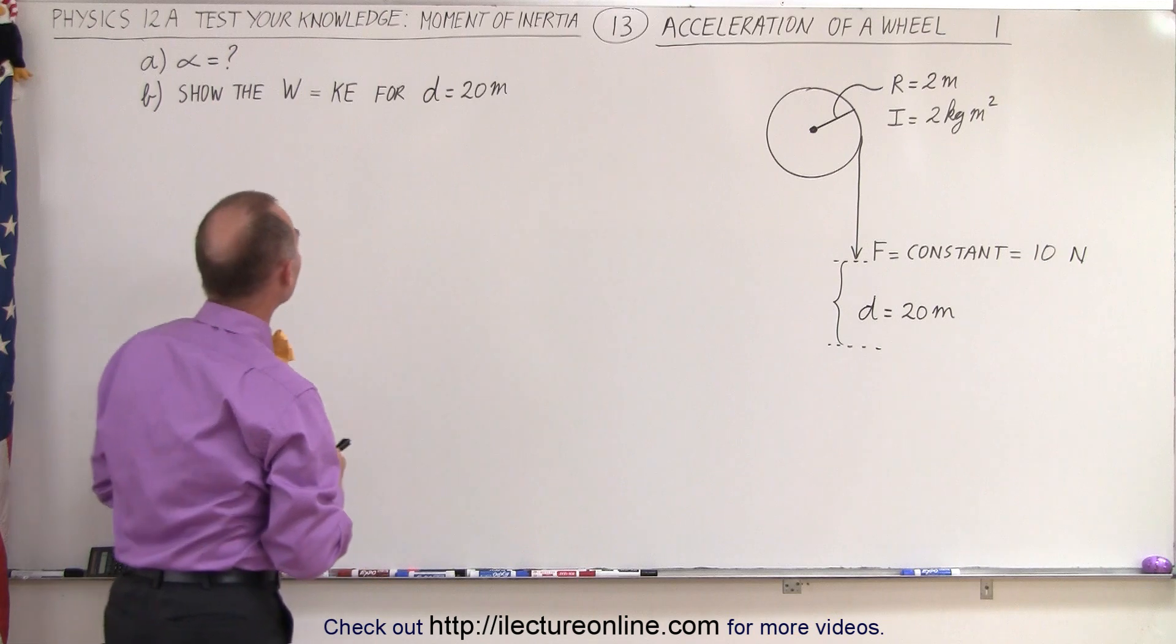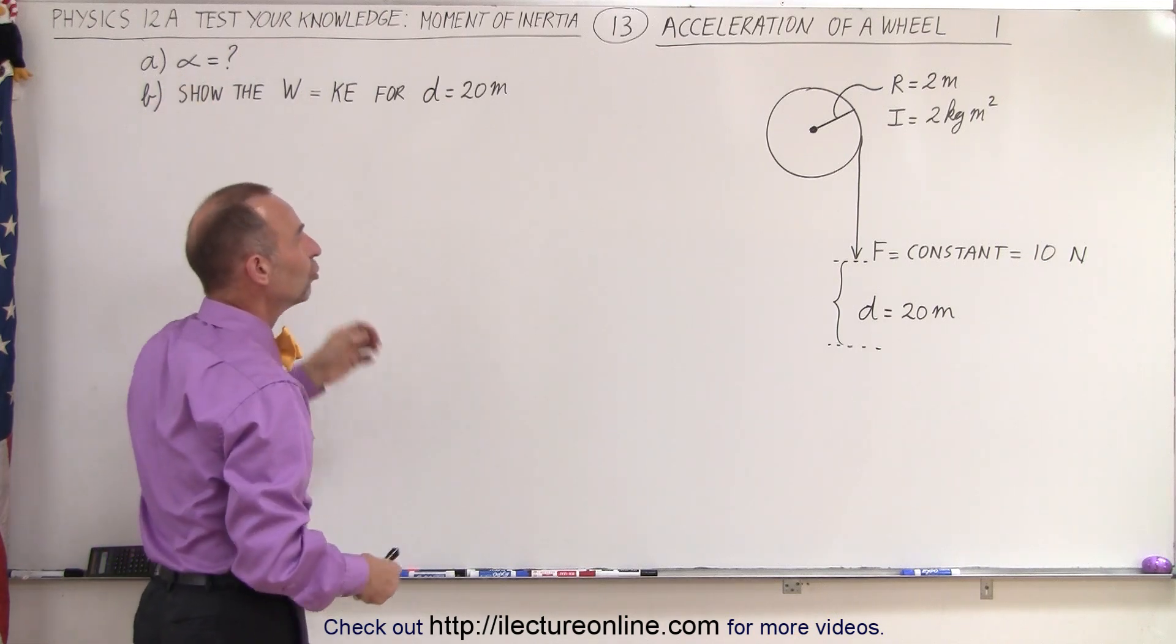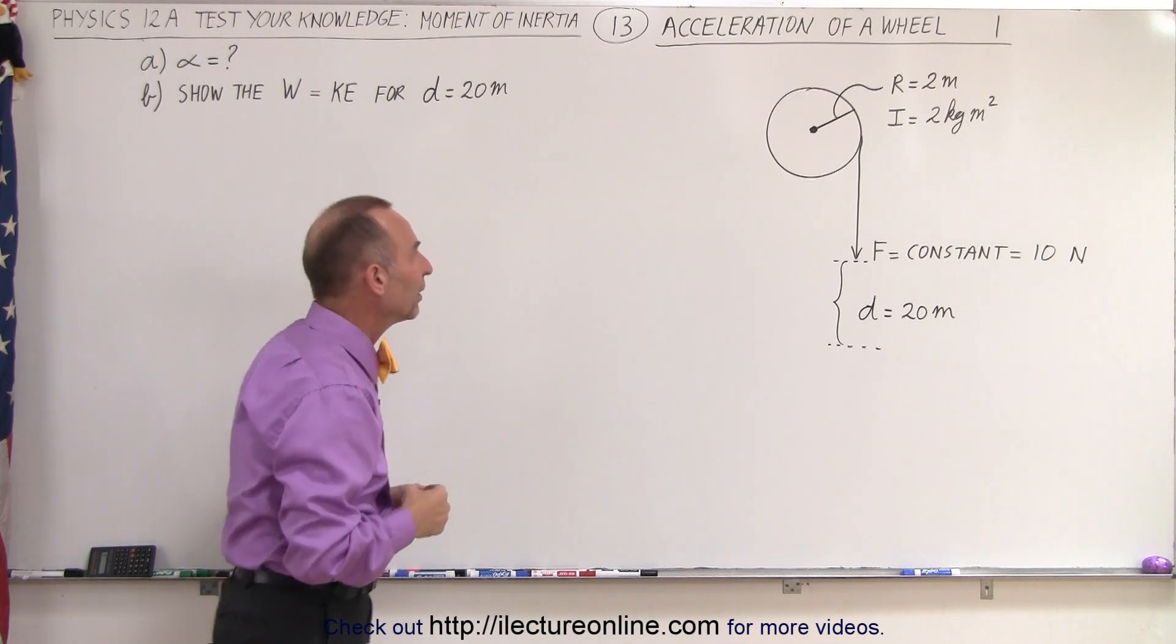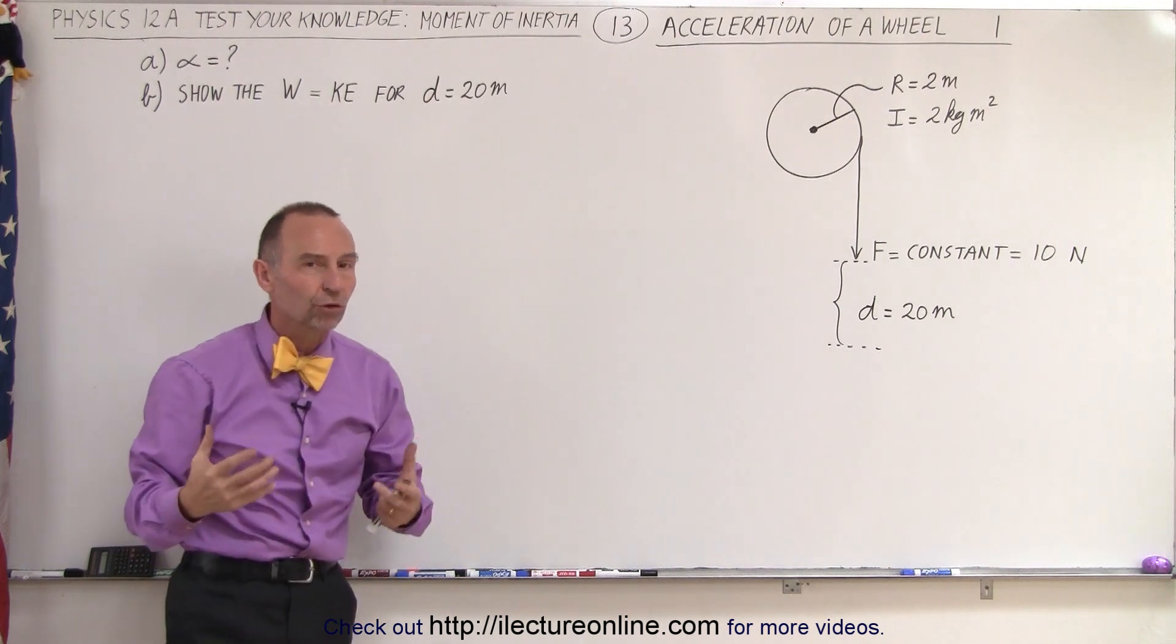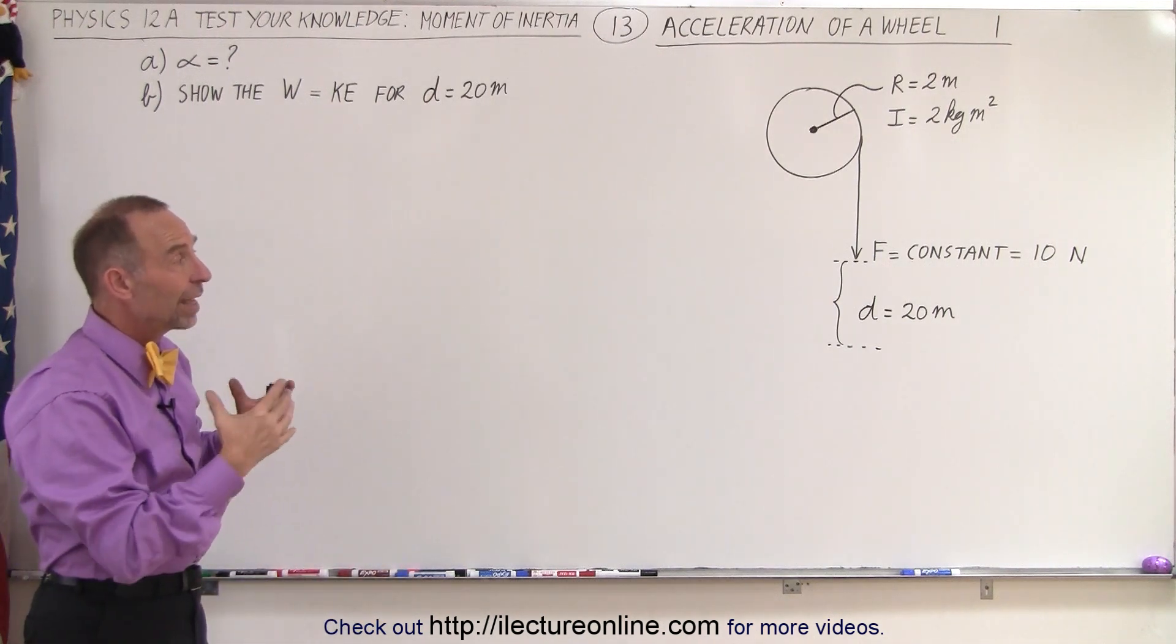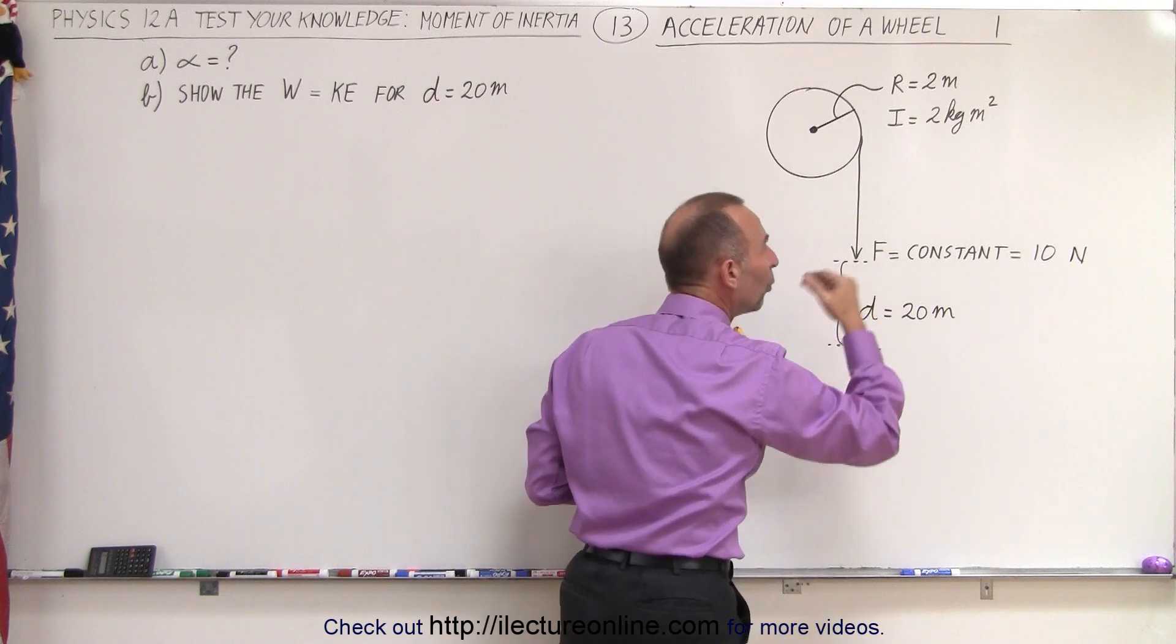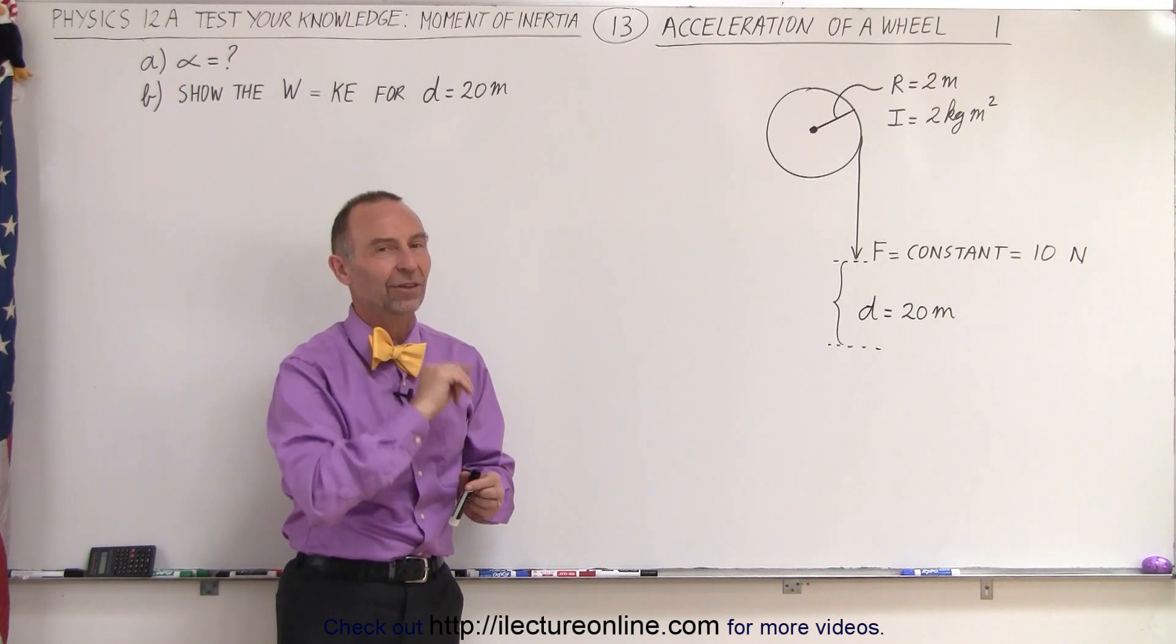What do we need to calculate? First of all, we need to find the angular acceleration, and then secondly, we need to show that if we pull down a distance of 20 meters, the work done to accelerate or to rotate the disc should be equal to the kinetic energy gained by the disc, and we're going to show that for part B. On the next video, we're going to do the same thing, but instead of applying a constant force of 10 newtons, we're going to hang an object on the string with a weight of 10 newtons and see if we get the same result or a different result.